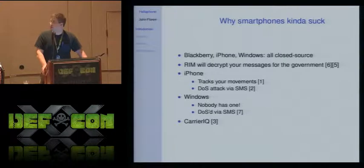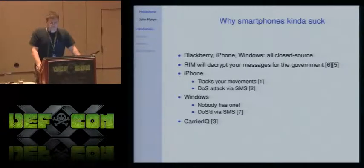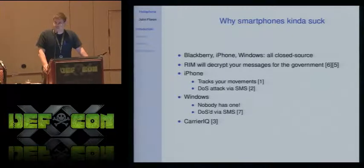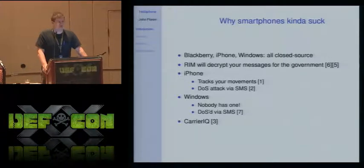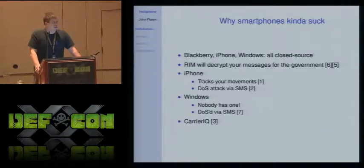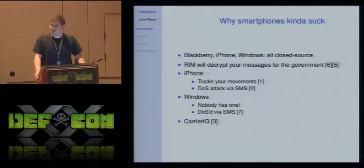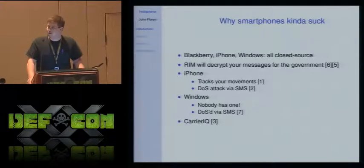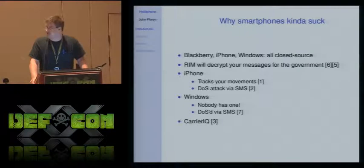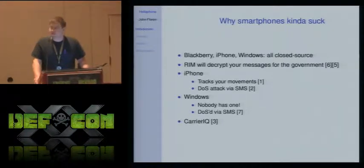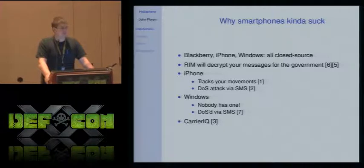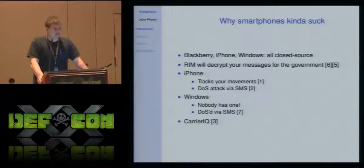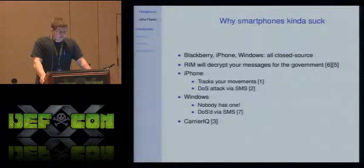The problem with smart phones, in terms of being a hacker wanting to hack on them, is that most of them are closed source. The Blackberry, the iPhone, the Windows Phone — you're not going to get the source to those. There's some security issues: RIM has indicated they're willing to decrypt users' text messages for the government, which happened recently in London after the riots. The iPhone maintains a record of all the cell towers you come into contact with. There's been instances of a DOS attack — a denial of service via SMS. Windows Phone similarly had a denial of service via SMS messages.